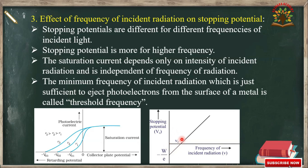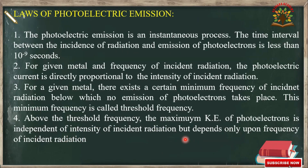That is why nu-naught is called the threshold frequency. From Lenard's experiment, we can derive four laws of photoelectric emission. The first law is that photoelectric emission is an instantaneous process — the time interval between the incidence of radiation and emission of photoelectrons is less than 10 to the power of minus 9 seconds.